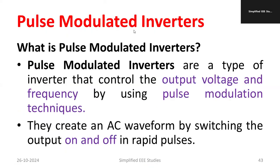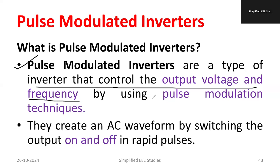Pulse modulated inverters are a type of inverters which control both the output voltage and frequency by using pulse modulation techniques. There are different types of pulse modulation techniques, and using them we are going to control the output voltage and the frequency.